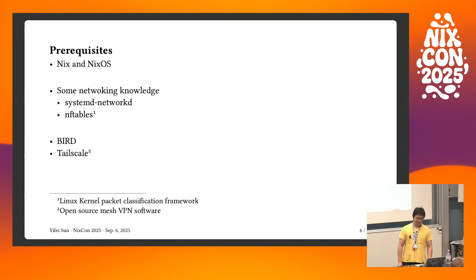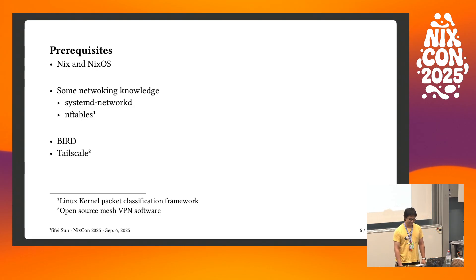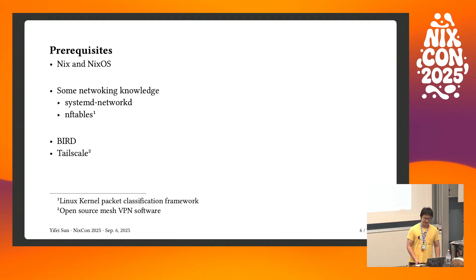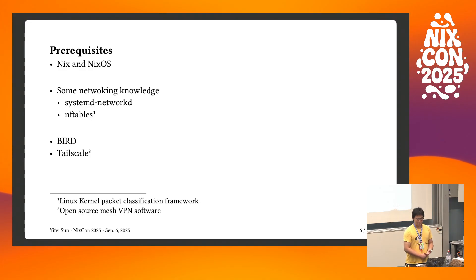A little prerequisite: it'd be nice if you know Nix and NixOS, and some networking knowledge like systemd-networkd, nftables (or iptables are also fine), BIRD, and TailScale. TailScale here is only used for internal routing, and you'll know why in a little bit.